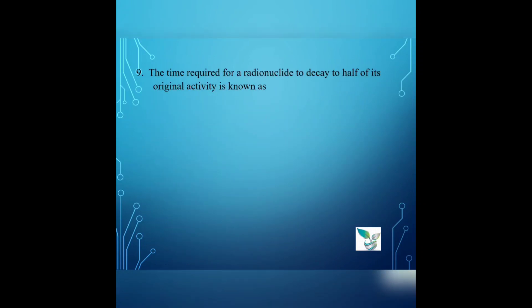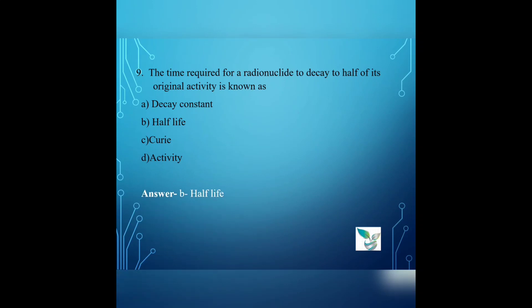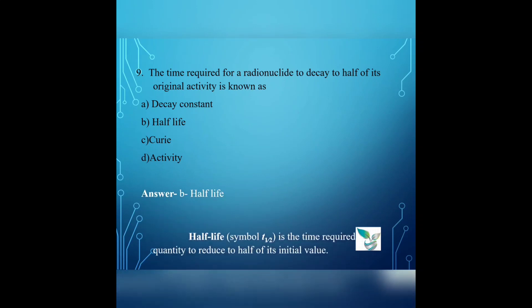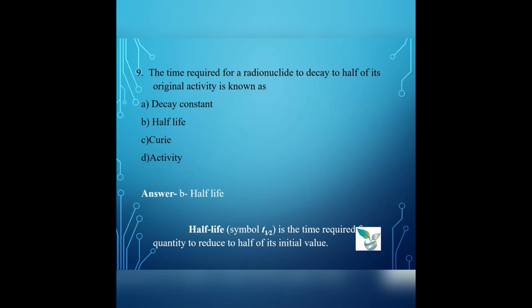Question number 9: The time required for a radionuclide to decay to half of its original activity is known as — Option A: decay constant, Option B: half-life, Option C: query, Option D: activity. The answer is Option B, half-life. The half-life is the time required for the quantity to reduce to half of its initial value.